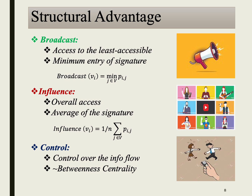To quantify information access advantage, we propose three measures: broadcast, influence, and control. The broadcast measure captures a node's ability to distribute information to all members of the network, especially those who are least advantaged; it is quantified as the minimum value within its access signature. The influence measure captures a node's visibility and overall impact within the network, determined as the average of its access signature. The control measure captures a node's control over the flow of information; its formulation is complex, resembling betweenness centrality but in an information access setting.